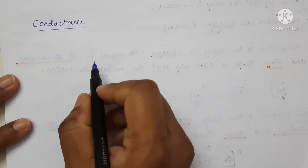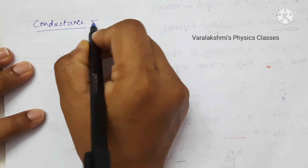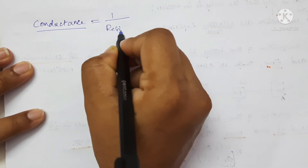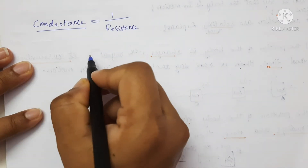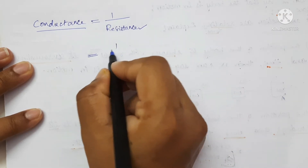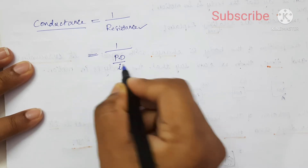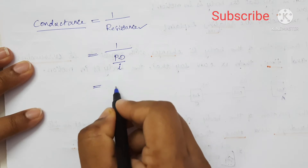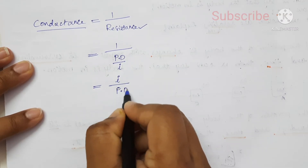In this video, let us see about the dimensions of conductance. The formula for conductance is 1 upon resistance. Now, writing the formula for resistance — that is, potential difference upon current — conductance will be current upon potential difference.